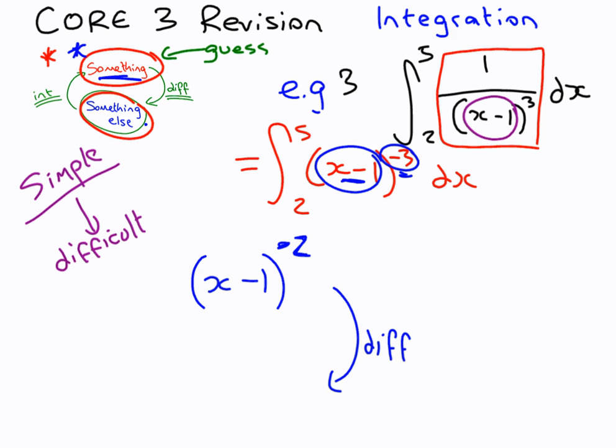When we do differentiate this, we times by the power, we get minus 2. This is quite nice in the fact that the differential of x minus 1 is just 1. So we don't really need to chain rule. Take 1 from the power. So we know how to differentiate this.